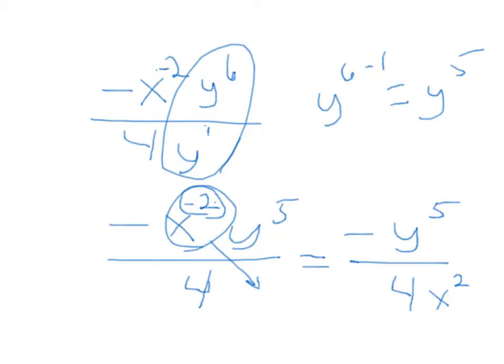After the x is moved to the denominator, the solution is negative y to the fifth power, divided by 4 times x squared.